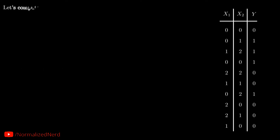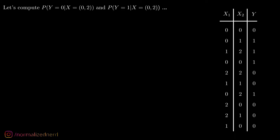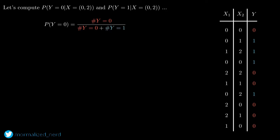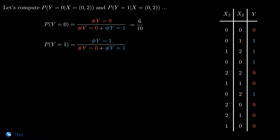Let's compute the conditional probabilities for both labels — y equals 0 and y equals 1. First, I'm going to compute the prior. The formula is simple: in the numerator, write the frequency of y equals 0, and in the denominator, write the total number of occurrences. Looking at the dataset, we have 6 occurrences of y equals 0 and 4 occurrences of y equals 1. So p(y=0) equals 6/10, and p(y=1) equals 4/10. We have our priors ready.